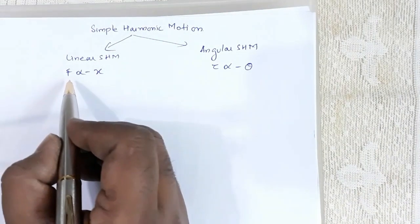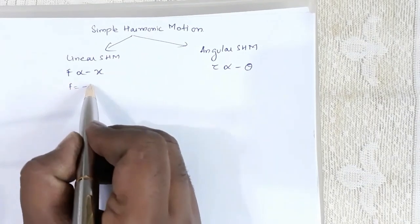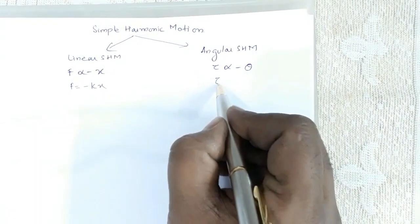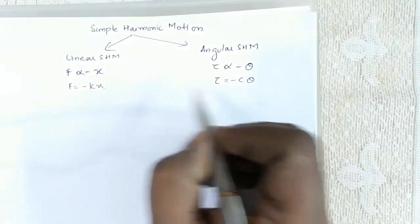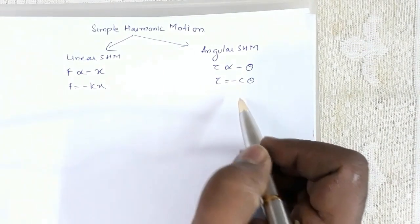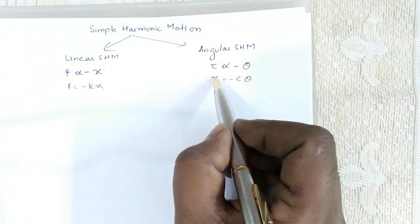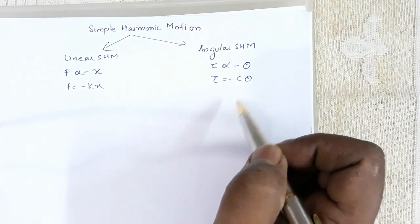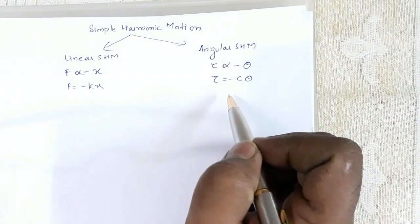For F proportional to minus x, I can write F = -kx. Similarly, I can write τ = -cθ, where k is the force constant and c is called couple per unit twist, or torque per unit angular displacement.